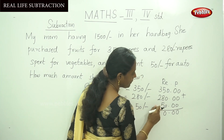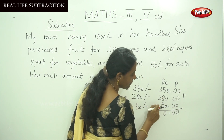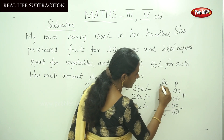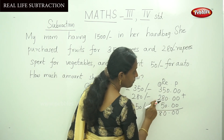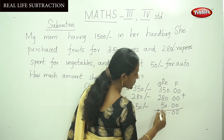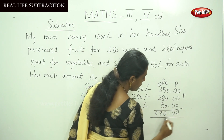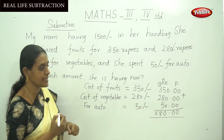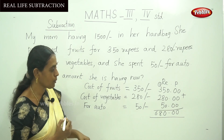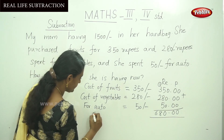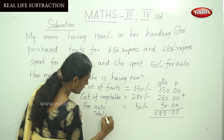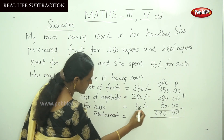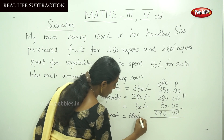Now add the three numbers. In the ones column: 0 plus 0 plus 0 equals 0. In the tens column: 5 plus 8 plus 5 equals 18 — write 8 and carry over 1. In the hundreds column: 3 plus 2 plus 1 (carry) equals 6. The total amount she spent is 680 rupees.